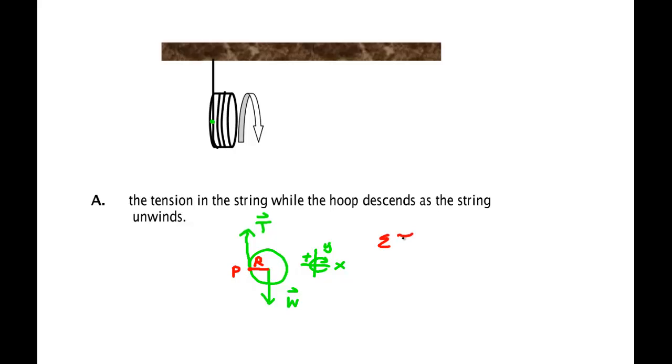Let's calculate the sum of the torques about this point, which I will call point P. Now my problem is, if I calculated about the center, the weight would produce no torque. The tension would produce a torque, but I don't know what its value is. And the angular acceleration alpha, I don't know it. So I wouldn't be able to find this or this if I calculated about the center.